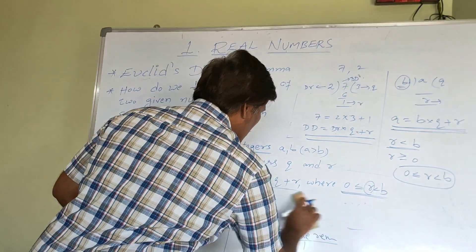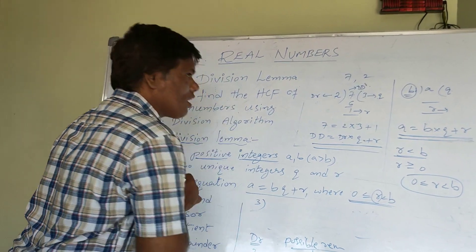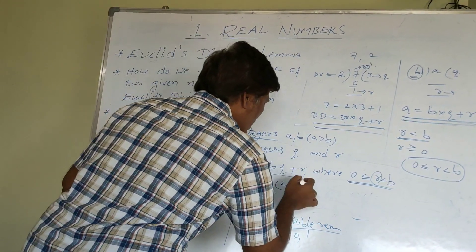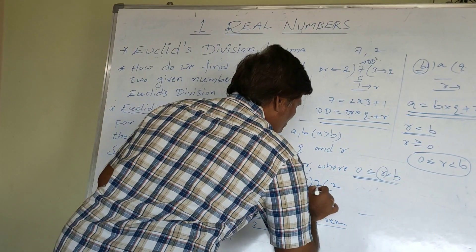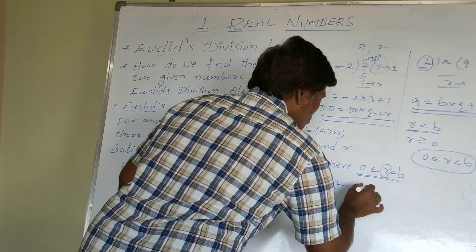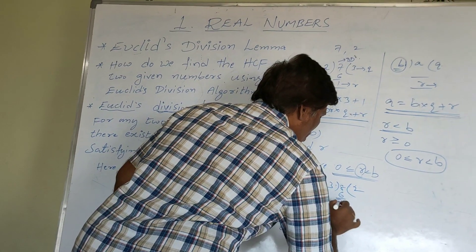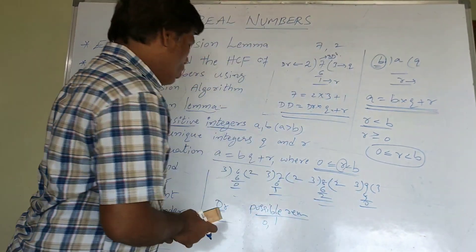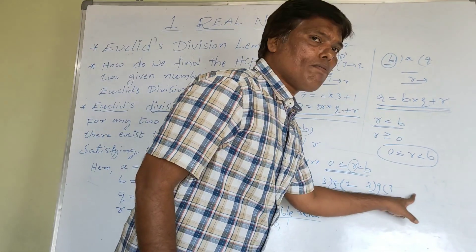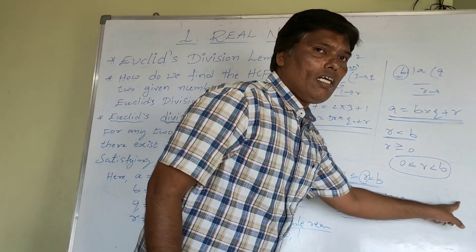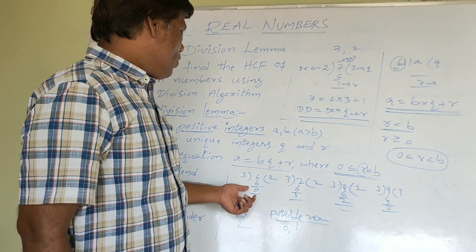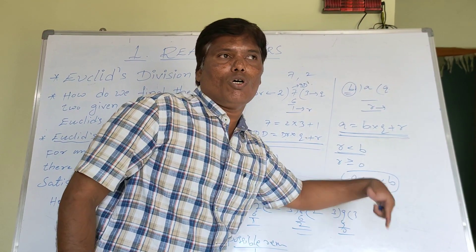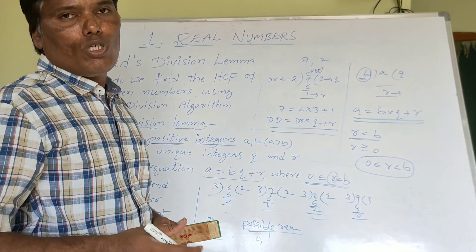Another example: let us take the division of any number by 3. Divide 6 by 3 — remainder is 0. Divide 7 by 3 — remainder is 1. Divide 8 by 3 — remainder is 2. Divide 9 by 3 — remainder is 0. So you can see a pattern: 0, 1, 2, 0, 1, 2 repeating. If you divide 10 by 3, you get remainder 1; divide 11 by 3, you get remainder 2. So the possible remainders when divisor is 3 are only 0, 1, and 2 — you never get 3 or 4 — because the remainder is always less than the divisor.